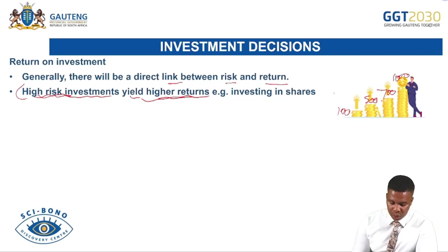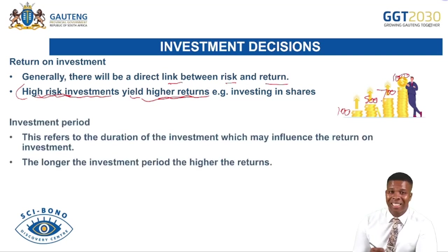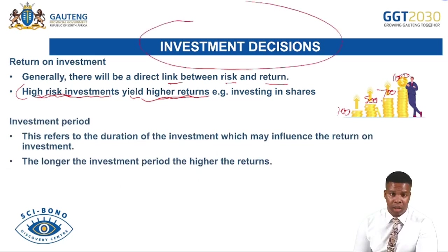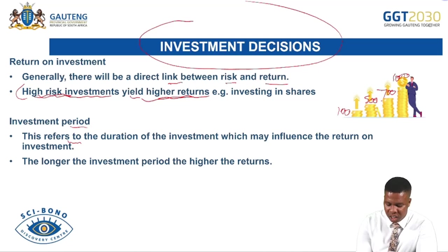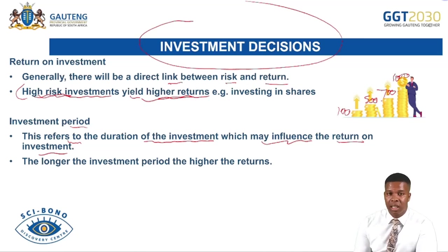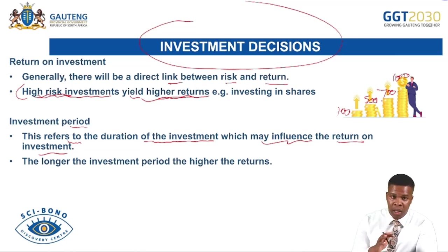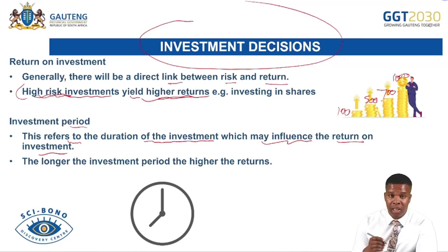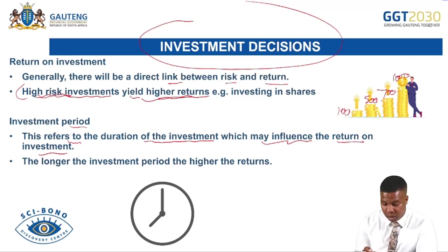The second factor is investment period. Before investing, think about how long you want to invest. This refers to the duration of the investment, which may influence the return on investment. The longer the investment period, the higher the return — if you invest for five years you earn returns for five years, compared to three years which yields lower returns. Consider what you can gain from investing longer versus shorter periods.